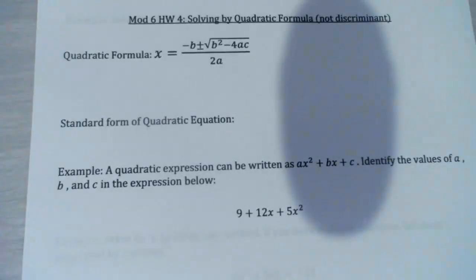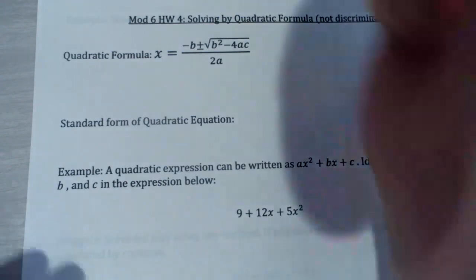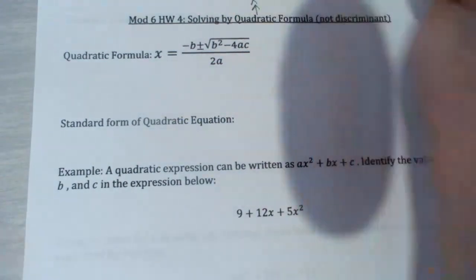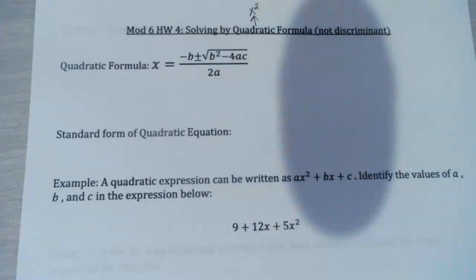This is our last video for Test 3. It's Module 6, Homework 4: solving by the quadratic formula, not the discriminant. Remember, our quadratic is our x-squared equations. So we've solved by factoring, we solved by the square root property, and now we're going to solve using the quadratic formula — three different ways of solving quadratics.